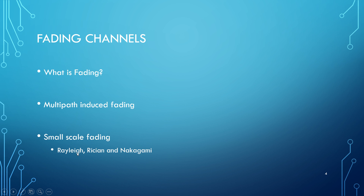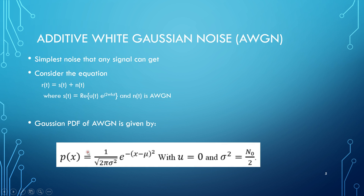In our paper, we only deal with Rayleigh and Rician fading channels. Additive White Gaussian Noise is one of the simplest noise types that any signal can experience. When a signal propagates through a channel, a small amount of noise gets added to the signal — this noise is the white Gaussian noise. Consider the equation R(t) = s(t) + n(t), where s(t) is the real value of the signal and n(t) is the additive white Gaussian noise. The Gaussian probability distribution function of AWGN has a mean value of zero and variance equal to N0/2, where N0 is the spectral power density.